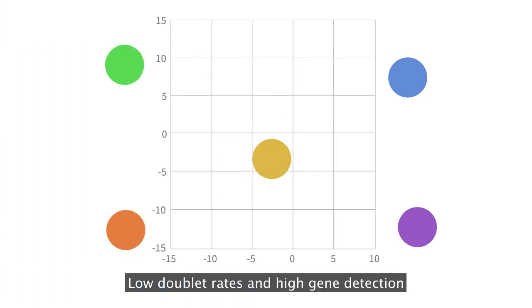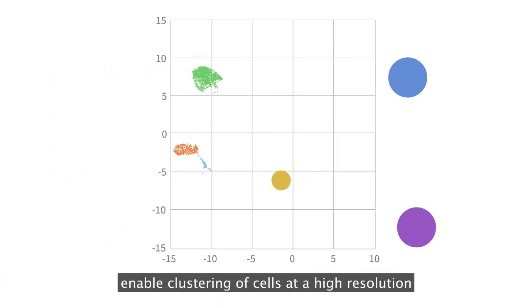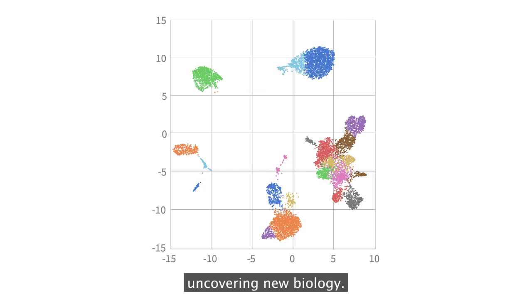Low doublet rates and high gene detection enable clustering of cells at a high resolution, uncovering new biology.